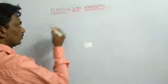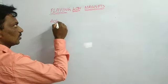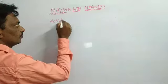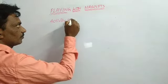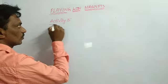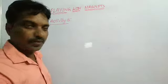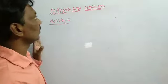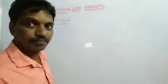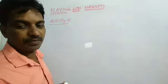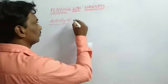So what is Activity 5? Our lesson name is 'Playing with Magnets' and we are going to discuss Activity 5: Finding Directions with a Bar Magnet.